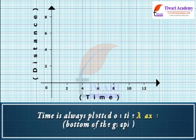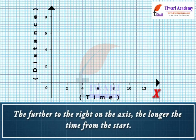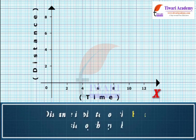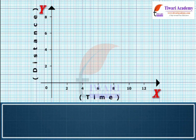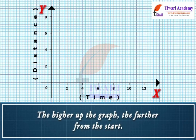Let's look at the axes. Time is always plotted on the x-axis at the bottom of the graph. The further to the right on the axis, the longer the time from the start. Distance is plotted on the y-axis on the side of the graph. The higher up the graph, the further from the start.